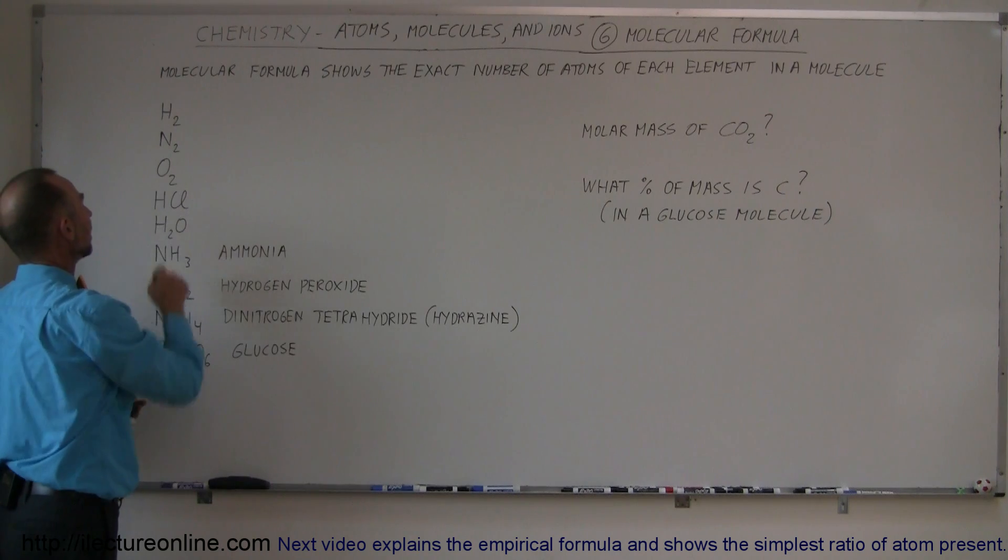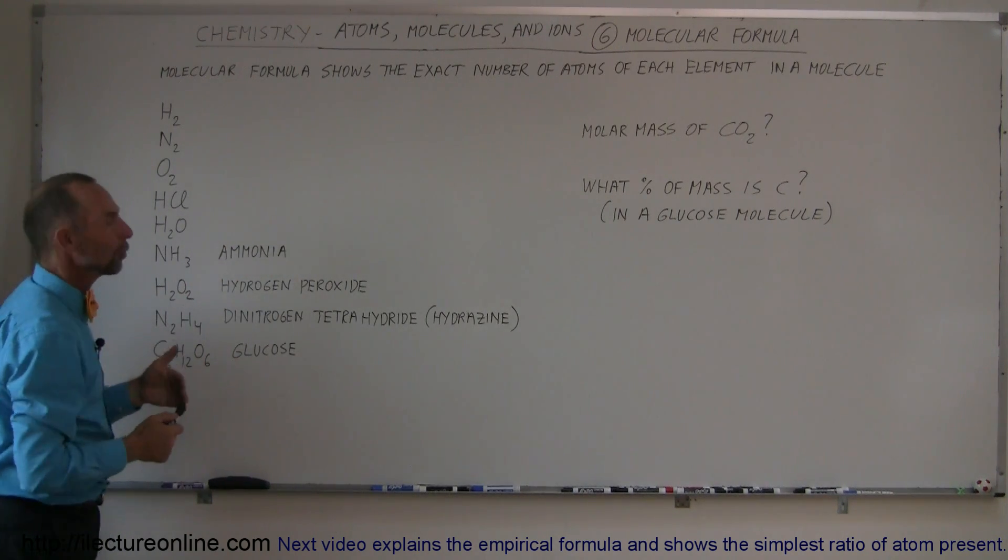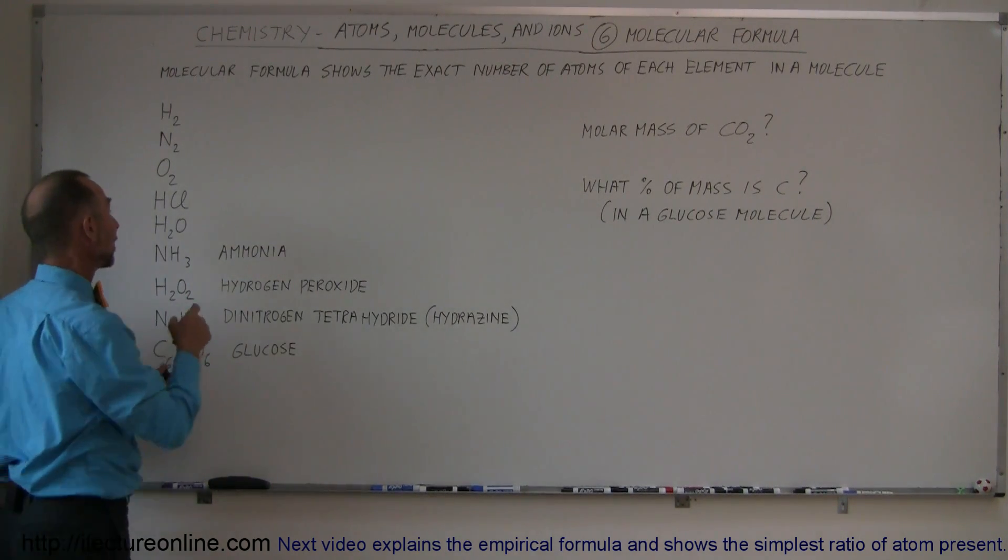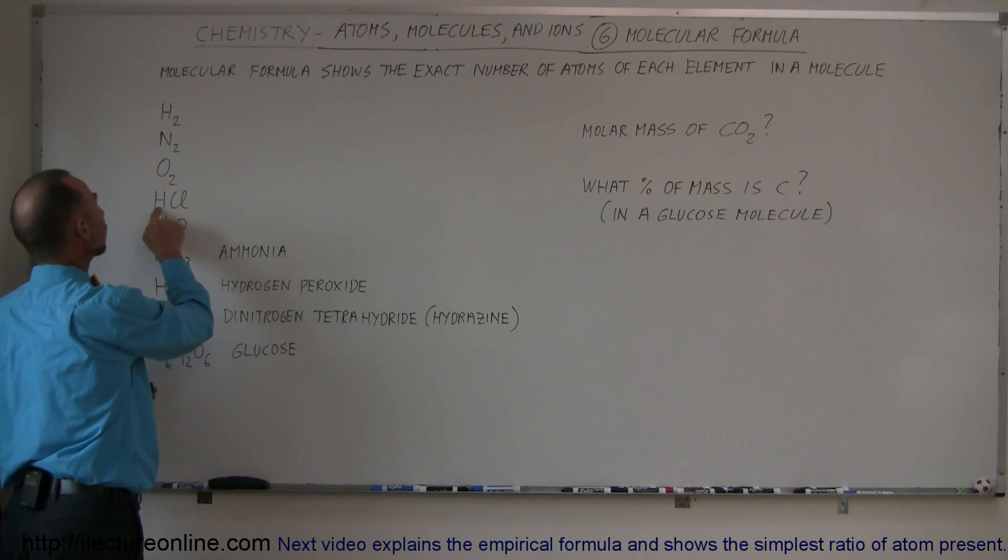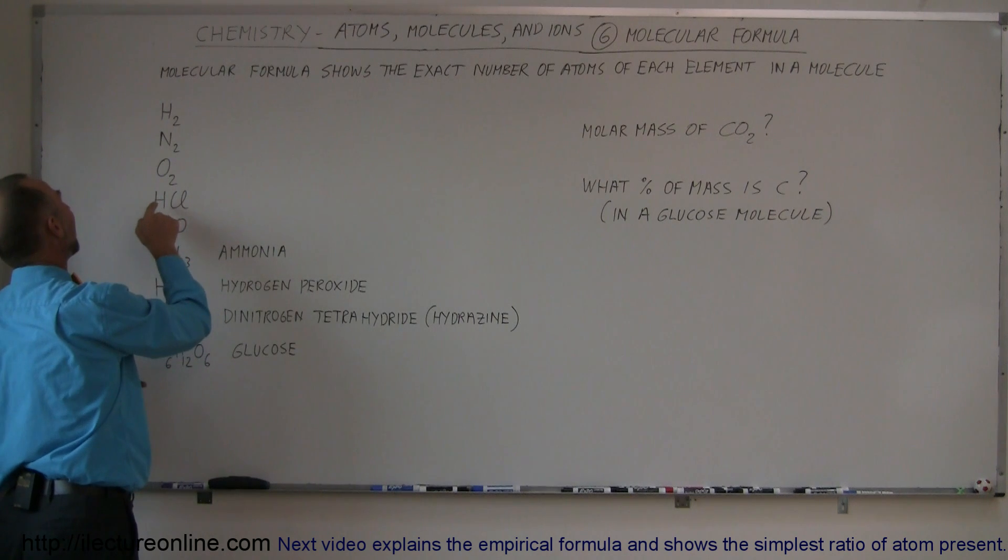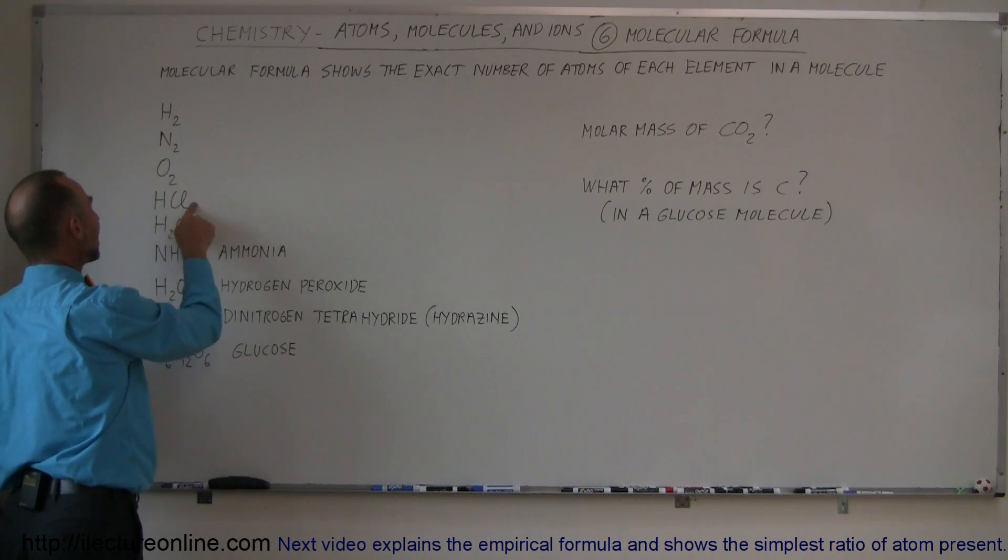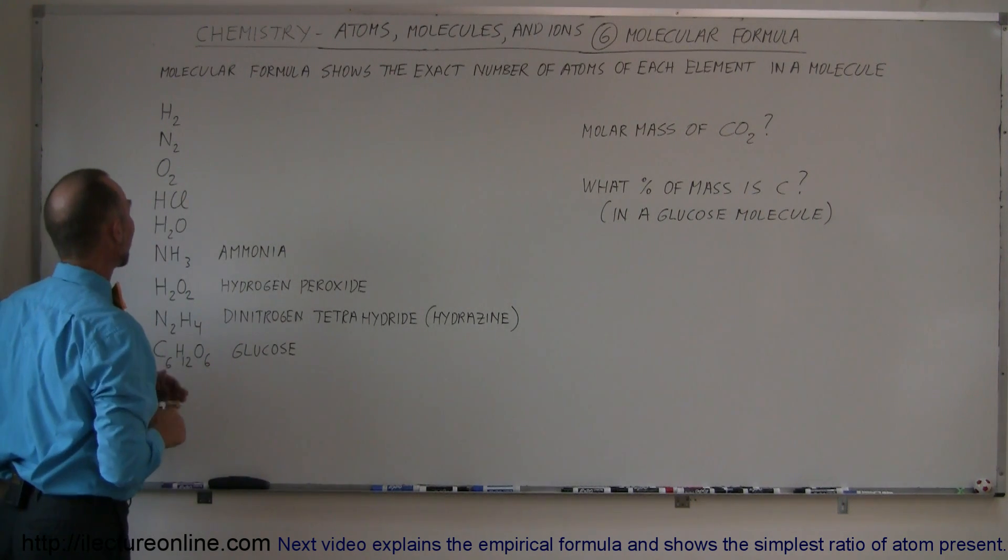Here we have HCl. This is hydrogen chloride, or also known as hydrochloric acid. It's a very corrosive acid, but it has one atom of hydrogen and one atom of chlorine forming a molecule of hydrochloric acid.